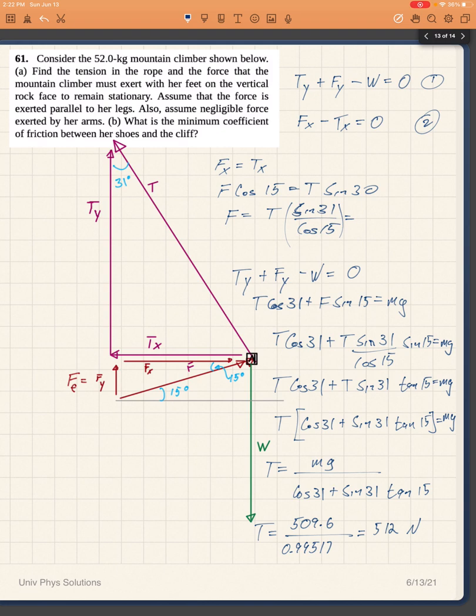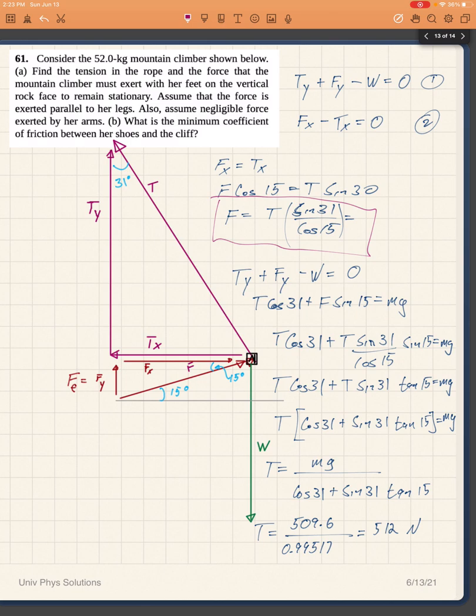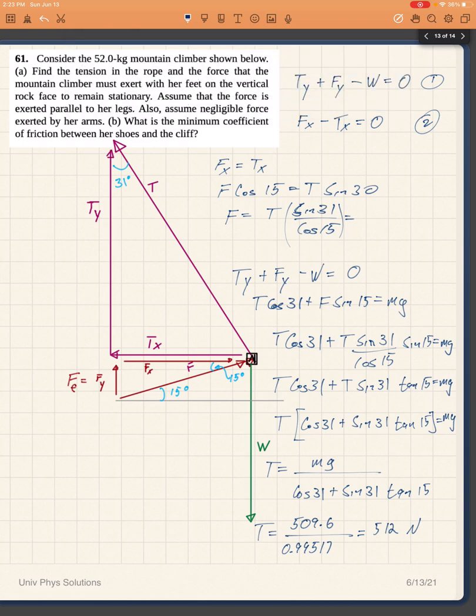That is the tension. Now for the force, I can do something similar, but since I already have the tension I can just go to one of my simplest equations that relates the force and the tension and use that instead. So I'll just plug this number for T and I will be able to find the force. The force is going to be equal to 512 times the sine of 31 divided by the cosine of 15, which gives me 273 Newtons. Okay, so that's part a.